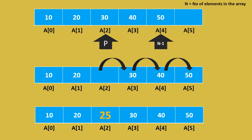What do you mean by inserting an element? How does it happen in an array? As we know, an array is a collection of homogeneous elements. All the elements are stored in consecutive locations next to each other, one by one.